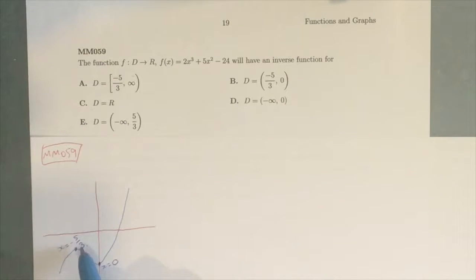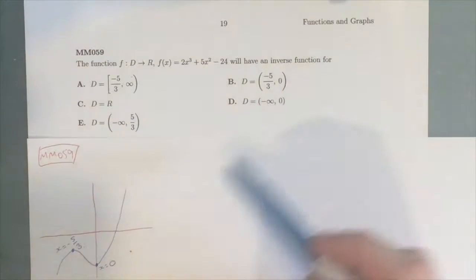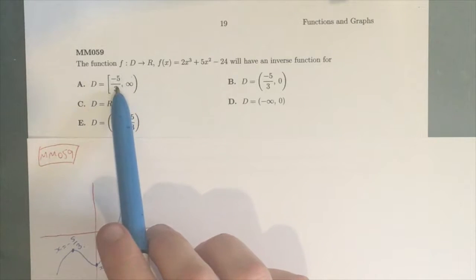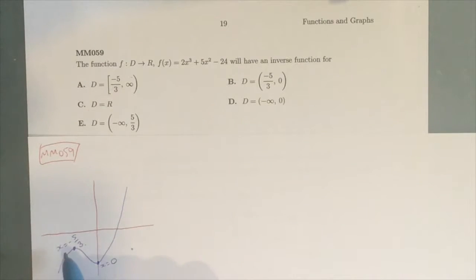So basically we need to see if there's any of those options in the multiple choice. We want from here to there, from here to here, or from here onwards. We look through and see if any of those apply. So we've got -5/3 to infinity, which is here to all the way across. But because that crosses this line, that means it creates a many-to-one function, and that's not what we want.